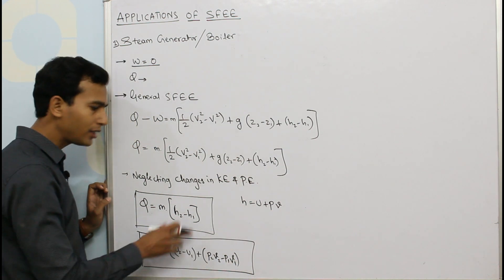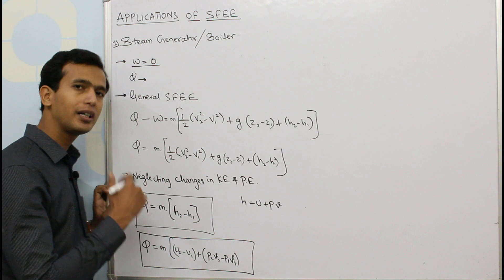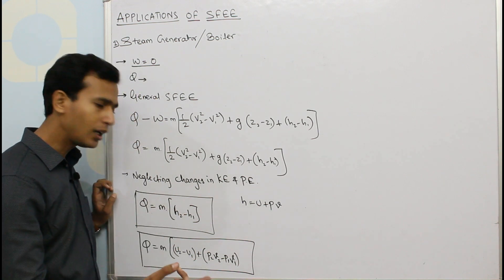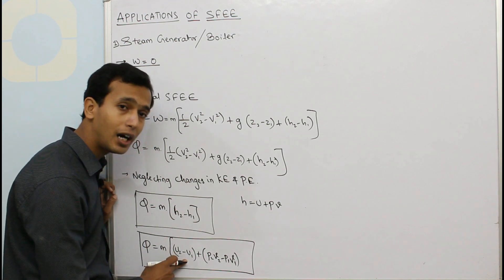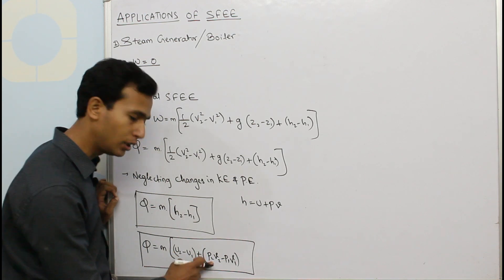It depends on the type of numerical. If the values of enthalpy are given, then you have to use this. If the values of internal energy and pressure and specific volume are given, then this equation has to be used.